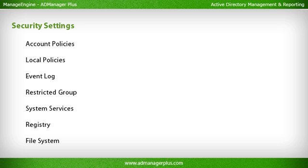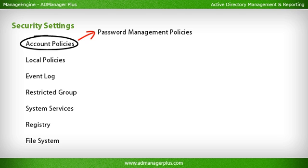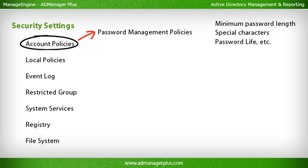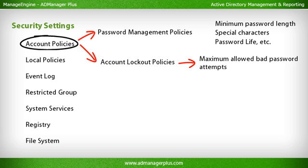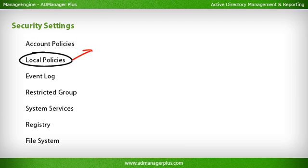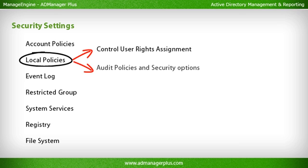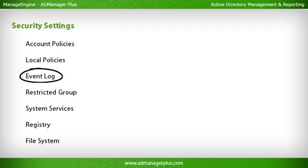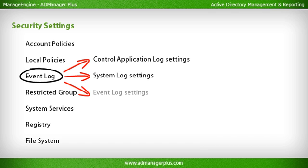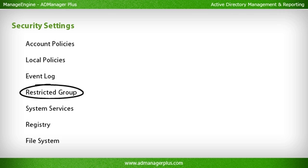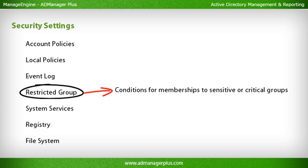Security Settings are used for setting and enhancing security measures on computers. There are different types: Account Policies, to control password management policies like minimum password length, special characters, password life, and account lockout policies like maximum allowed bad password attempts and lockout time. Local Policies, to control user rights assignment, audit policies, and security options. Event Log, to control application, system, and event log settings. Restricted Groups, for conditions on memberships to sensitive or critical groups.